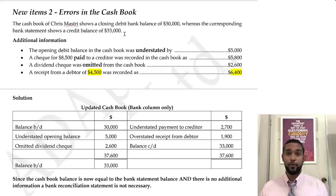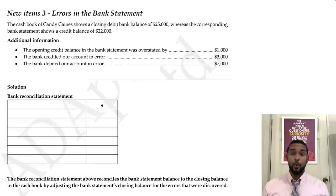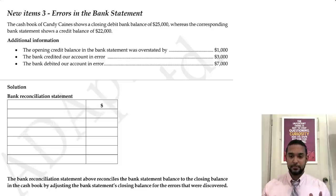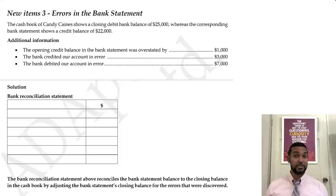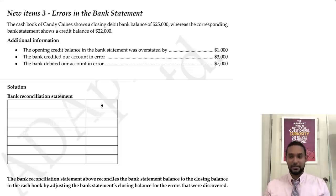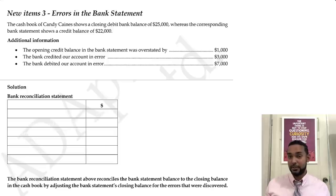Now let's talk about errors in the bank statement. Why would there be errors in the cash book or bank statement? Two major reasons: human error, since humans are usually part of the recording process, and technological errors — software glitches or incorrect source information. Either way, it comes down to human errors or technological errors.